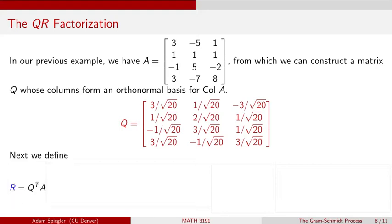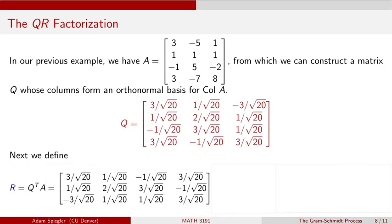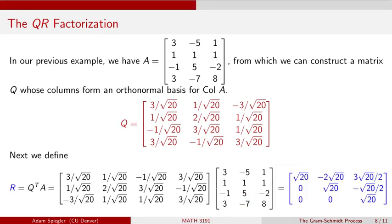Let's next define a matrix, a second matrix R, which is defined by taking the product of the transpose of this matrix Q that we just defined and the matrix A that we started with. We can calculate the product of these two matrices. The first one, Q transpose, is just the transpose of this matrix Q that we formed from the orthonormal basis. So now each row of Q transpose is a different one of the basis vectors from the orthonormal basis, and I'm going to multiply this on the right by matrix A that we started with.